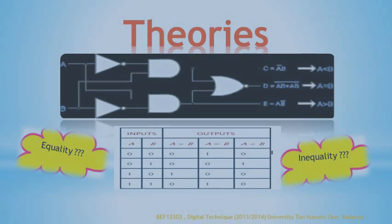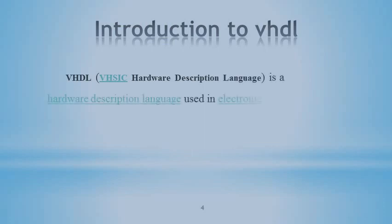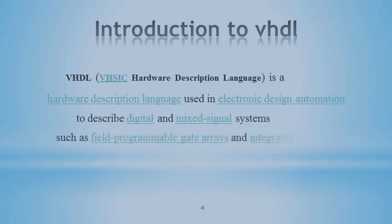Now we go to VHDL. VHDL is a hardware description language used in electronic design automation to describe digital and mixed digital systems such as field programmable gate arrays and integrated circuits. VHDL can also be used as a general purpose parallel programming language.